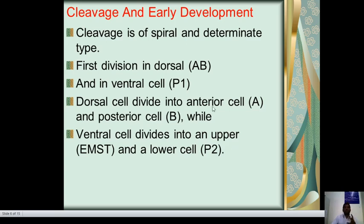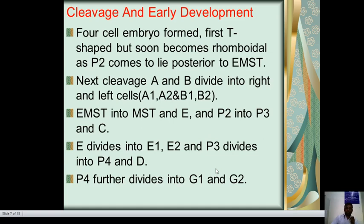The next stage is cleavage and early development. Cleavage is of a spiral and determinate type. The first division produces a dorsal cell AB and a ventral cell P1. The dorsal cell divides into an anterior cell A and posterior cell B. The ventral cell divides into an upper cell EMST and a lower cell P2. The four-cell embryo first forms a T-shape but soon becomes rhomboidal as P2 comes to lie posterior to EMST.